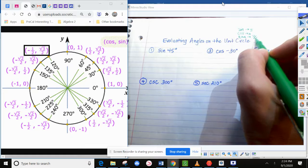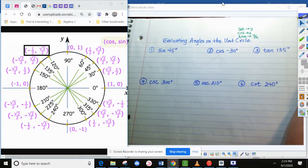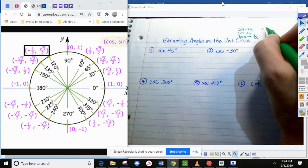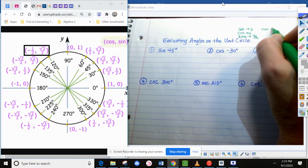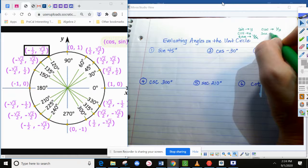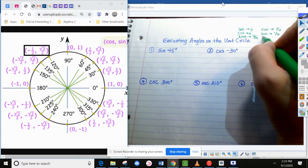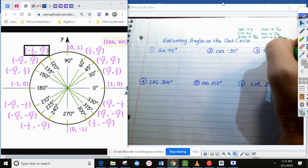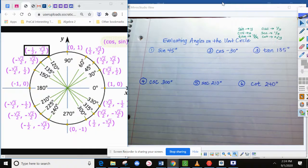And then you can build the other three reciprocal ratios by flipping those as we would when we did the right triangle questions. So the cosecant is 1 over y, the secant 1 over x, and the cotangent x over y. So there are the ways to use the coordinates from the unit circle to evaluate these particular angles.